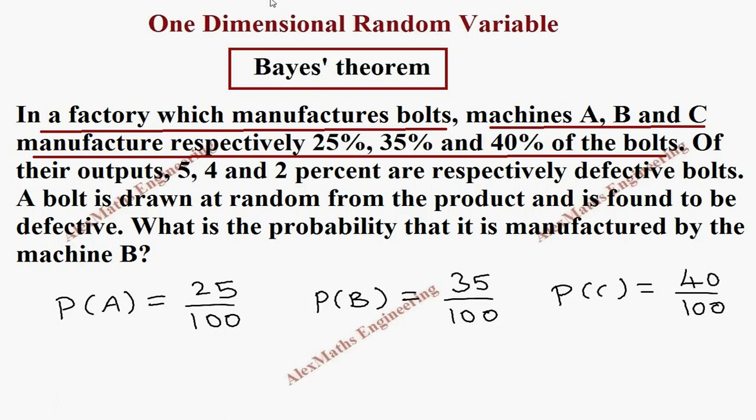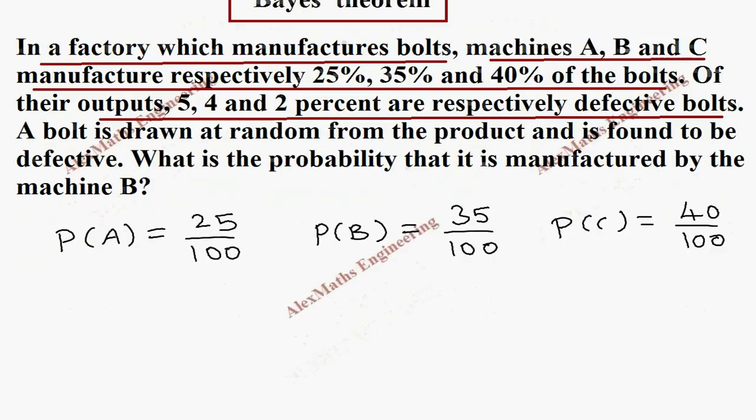Now, they have also given of their outputs 5, 4 and 2 percent are respectively defective bolts. So, they gave the probability for the defective bolts. So, we have to write it as: in machine A, it is defective.